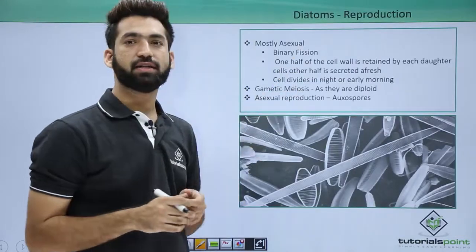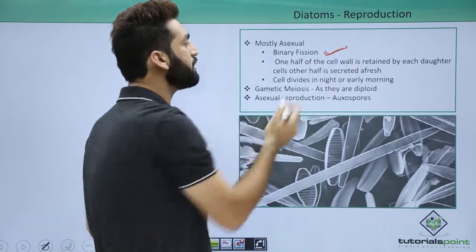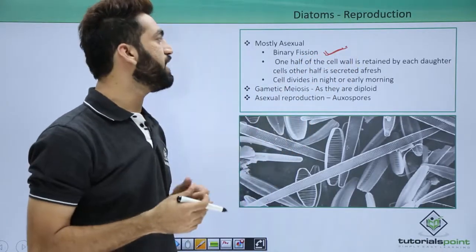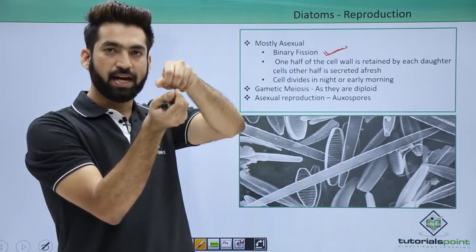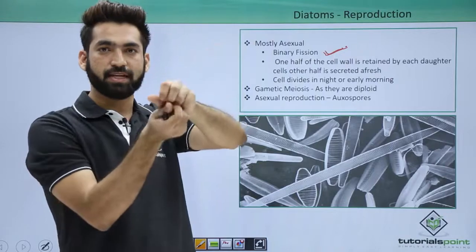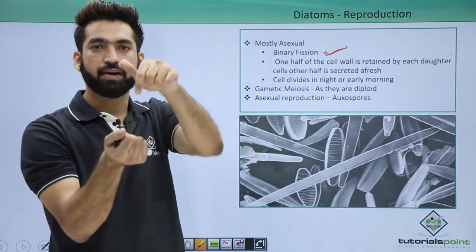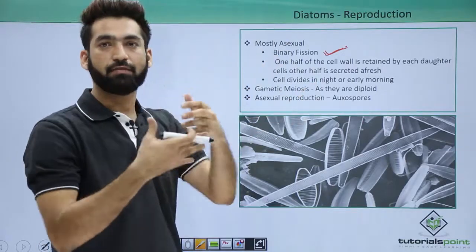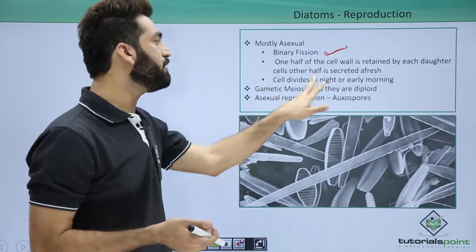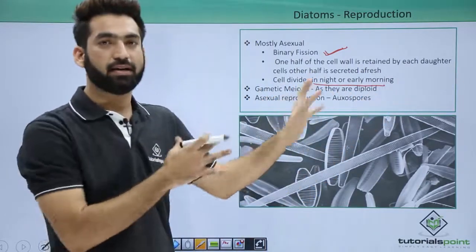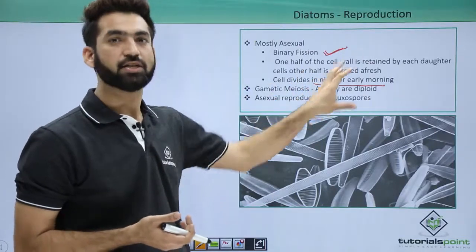Talking about reproduction in diatoms: diatoms reproduce basically by the asexual method of binary fission. During binary fission, the two halves — epitheca and hypotheca — separate. Epitheca gets a fresh hypotheca and hypotheca gets a fresh epitheca, and that is how they form the new body. They basically divide at night or in early morning because at other times they are doing photosynthesis.